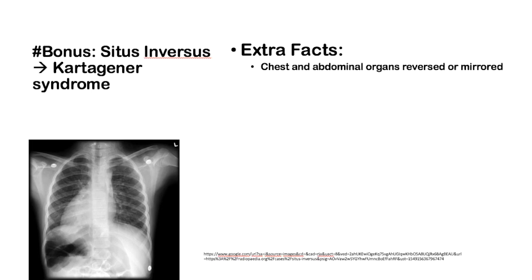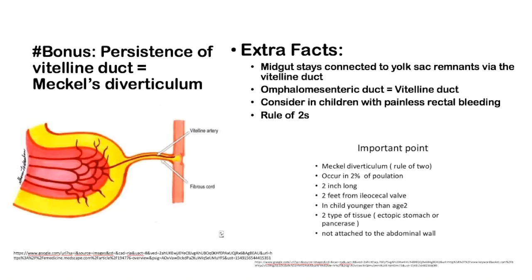Two bonus topics: First, situs inversus is associated with Kartagener syndrome (primary ciliary dyskinesia) — the heart and abdominal organs are mirror-imaged. Second, persistence of the vitelline duct (also called the omphalomesenteric duct) results in Meckel's diverticulum — the midgut stays connected to yolk sac remnants, pulling out a portion of bowel that can become lined with gastric mucosa cells, produce acid, and cause bleeding. The classic presentation is a child with painless rectal bleeding. Remember the rule of twos for Meckel's diverticulum, a highly tested topic.